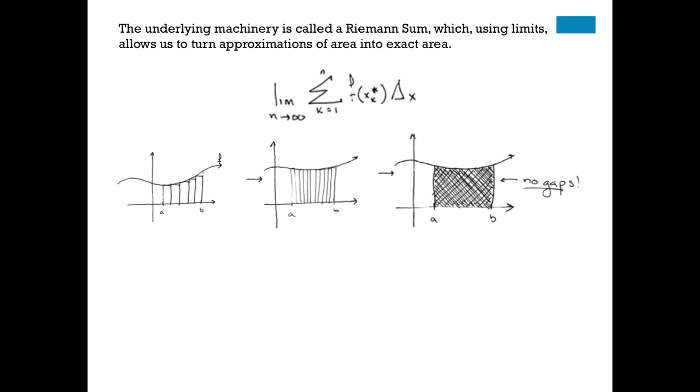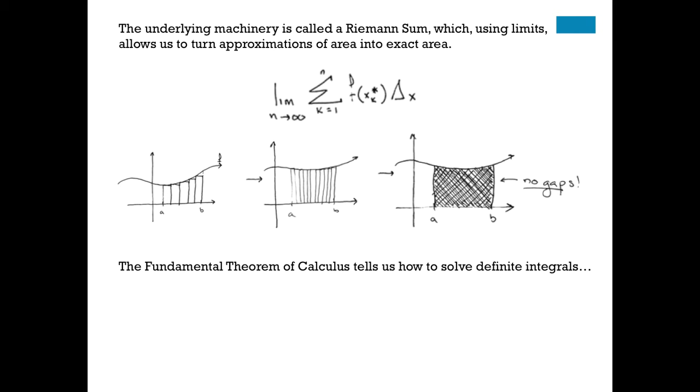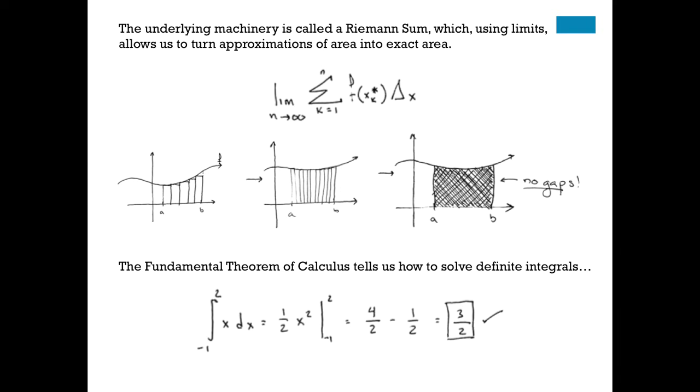Now, we've seen that limits and sums are kind of a pain to deal with. We then uncovered this thing called the fundamental theorem of calculus that tells us how to solve definite integrals. It says that if you've got a definite integral, like the one from the previous slide, you just take the antiderivative of the function. You get 1 half x squared. You plug in the top bound, plug in the bottom bound, subtract those two answers, and in this case you get 3 halves, same thing we got before using geometry.